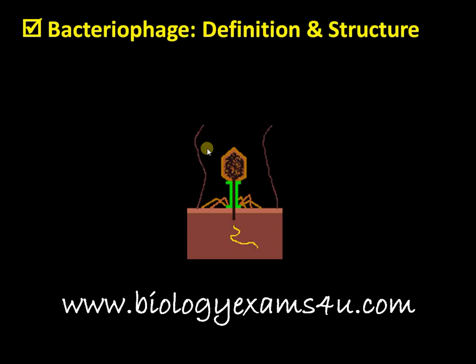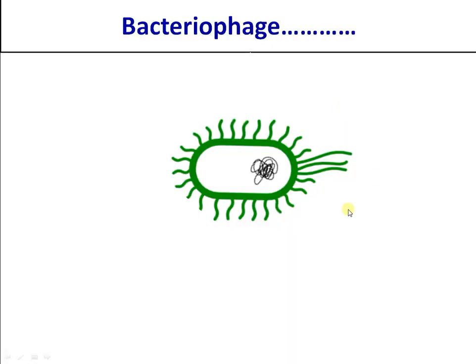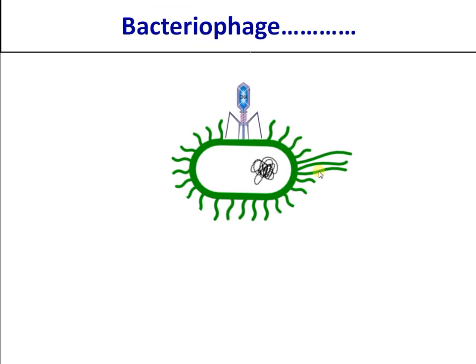In this tutorial we are going to discuss bacteriophage, its definition and structure in detail. Bacteria are undoubtedly the most successful group of organisms on the planet, capable of surviving in almost any environment. The only threat to a bacterium is viruses, or bacteriophages — viruses that attack bacteria.